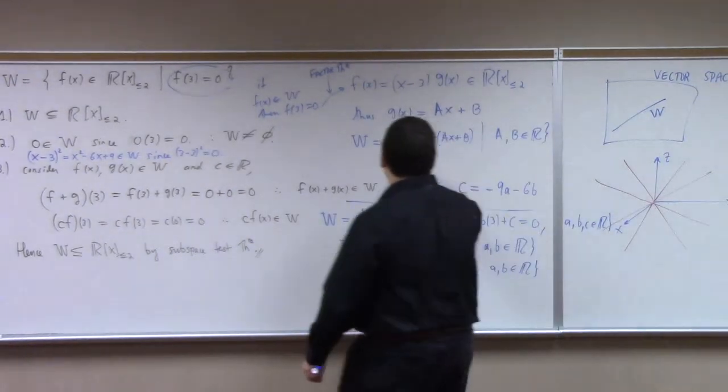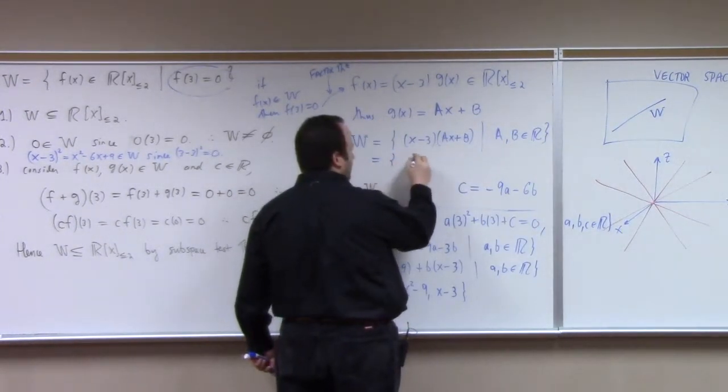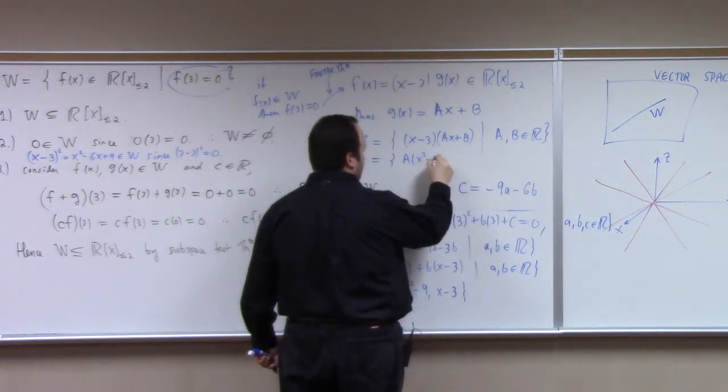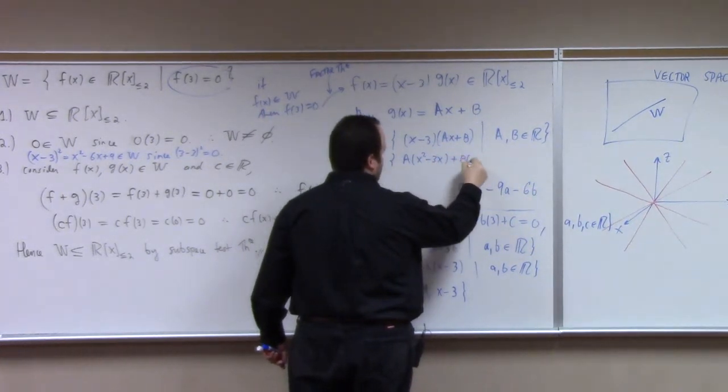Now, of course, if you go my route up here, you get what? a times x squared minus 3x plus b times x minus 3, such that big A and big B are real.